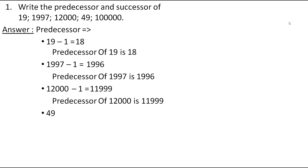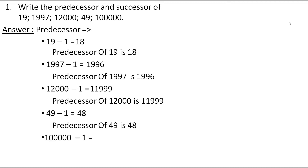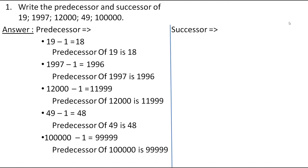The next number is 1,00,000. We subtract 1 and get the answer 99,999. Therefore, the predecessor of 1,00,000 is 99,999. Now, let's find the successor.